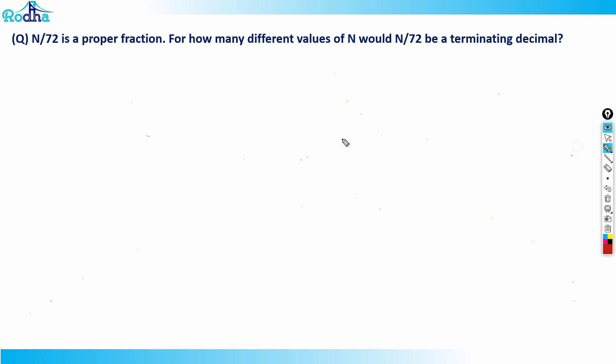Okay, hi guys, so let's look at this question here. It's an interesting question. It says that N/72 is a proper fraction. For how many different values of N would N/72 be a terminating decimal?